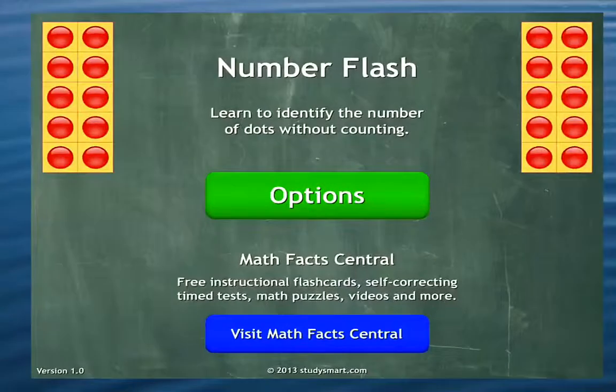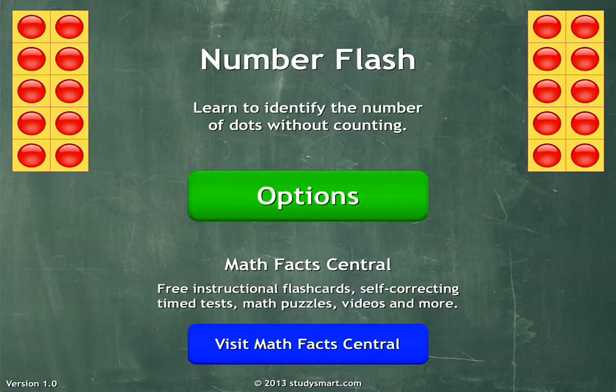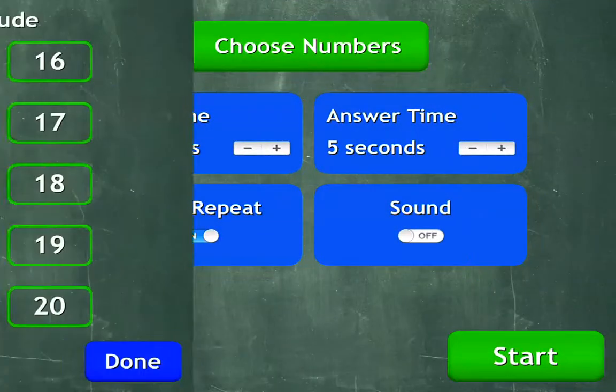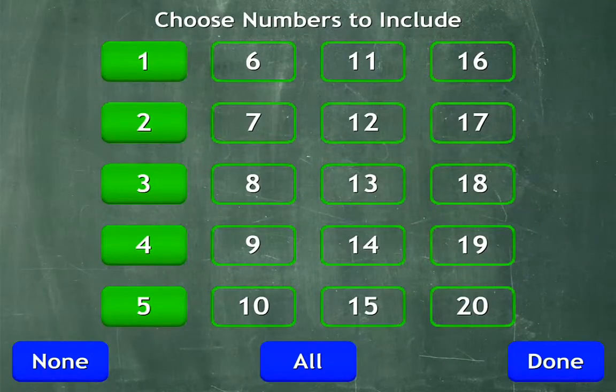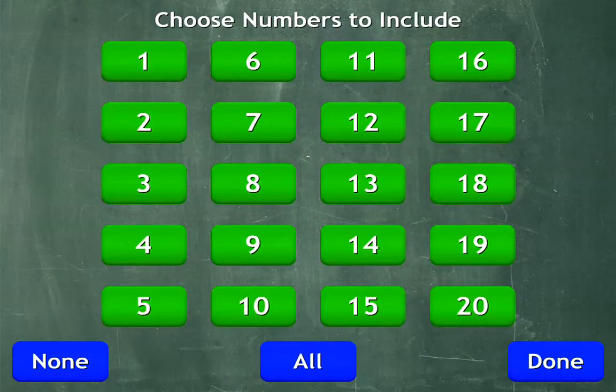This app is called Number Flash, and we're going to look at some of the options. I can choose the numbers, so here I just have selected up to 5, but we could go and select all the way to 20.